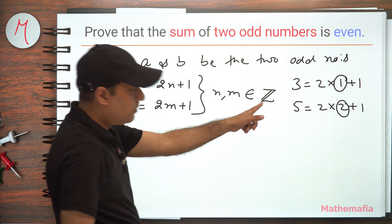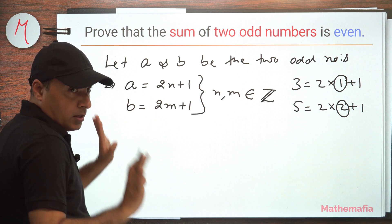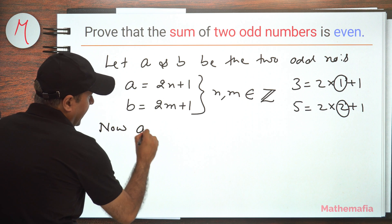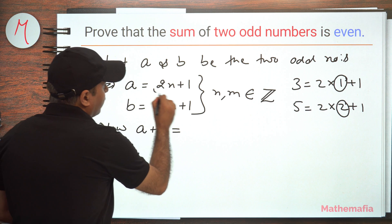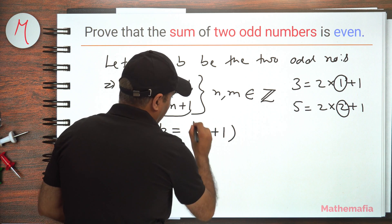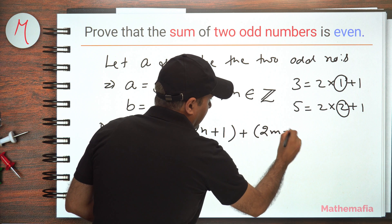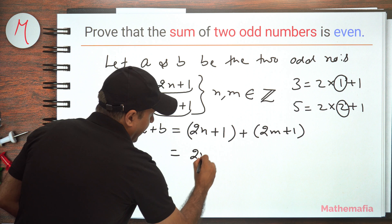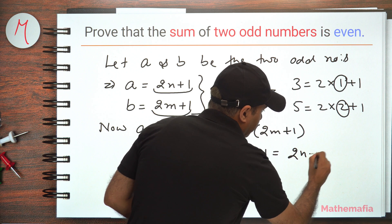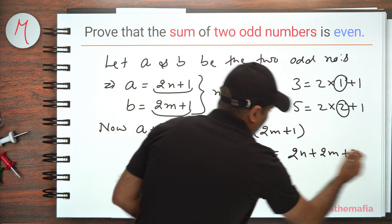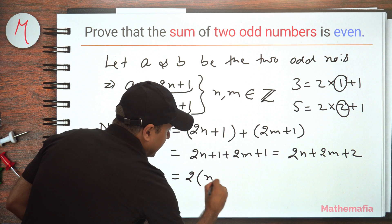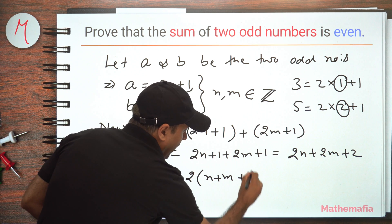The important thing is that both n and m are integers — they belong to ℤ, the set of all integers. Now we have to add these two numbers. So a plus b will be equal to (2n plus one) plus (2m plus one), which equals 2n plus one plus 2m plus one, which equals 2n plus 2m plus two, since one plus one is two.